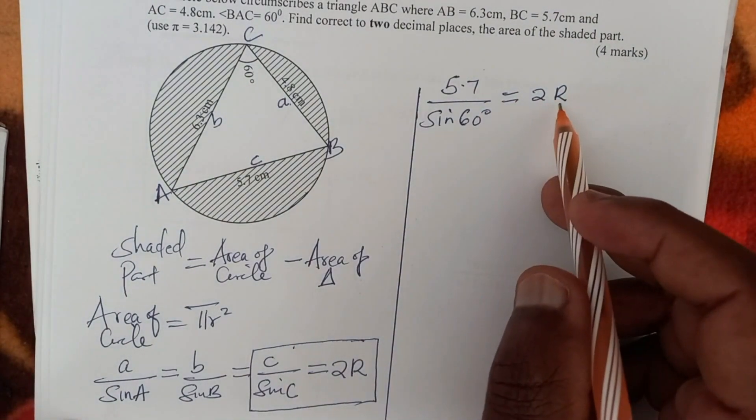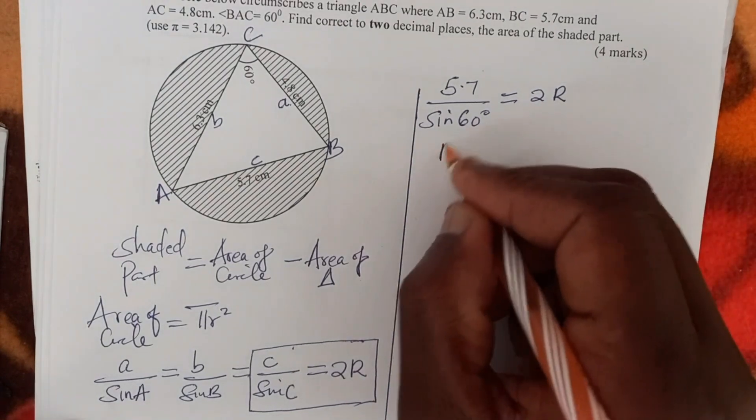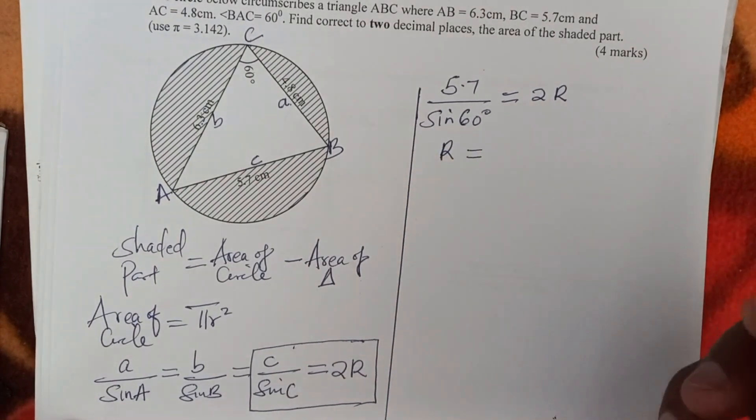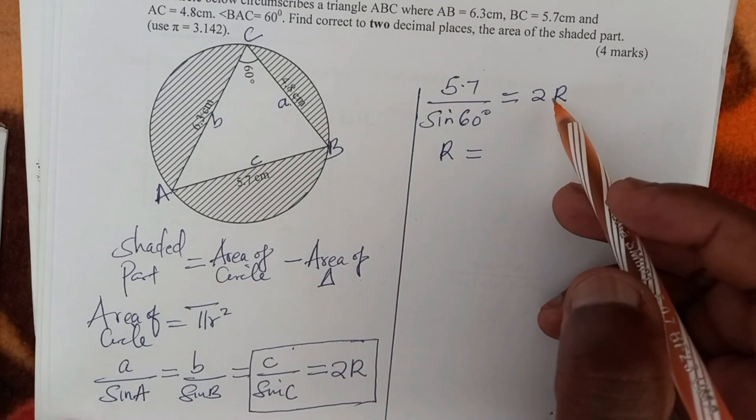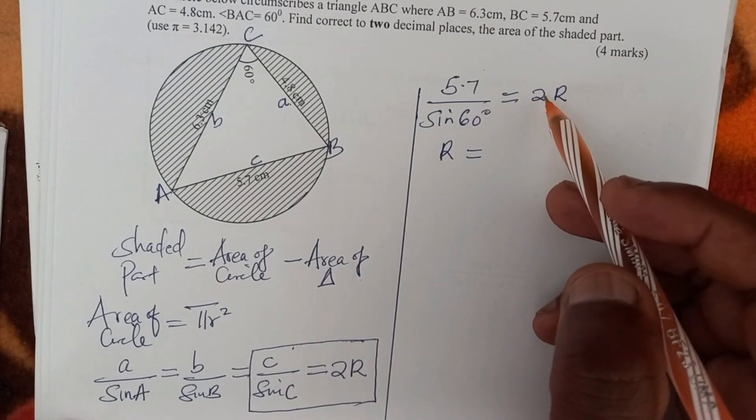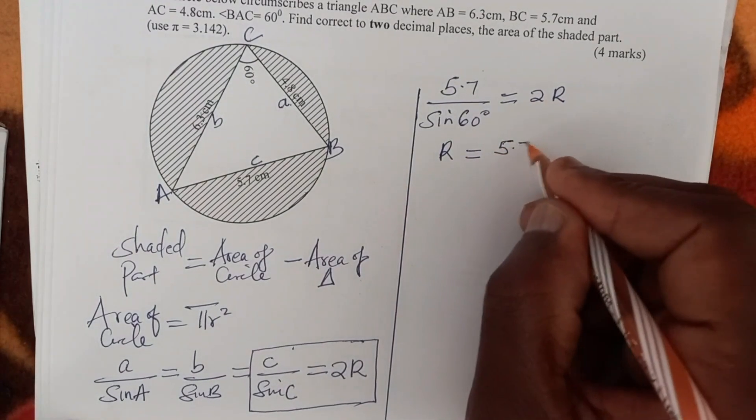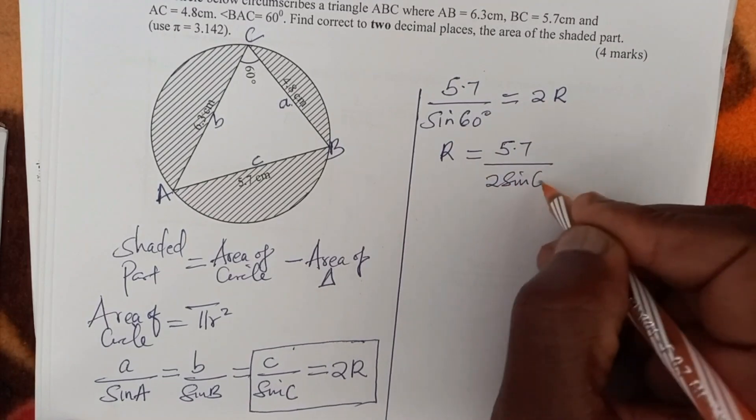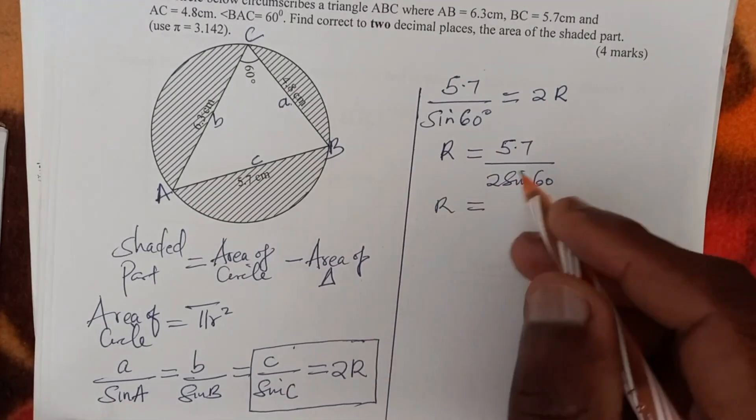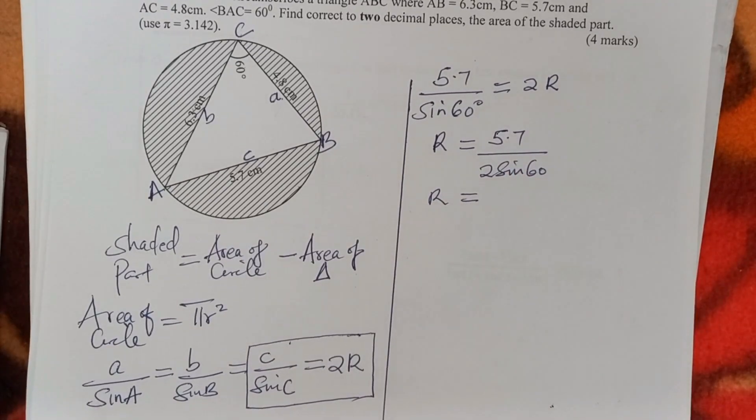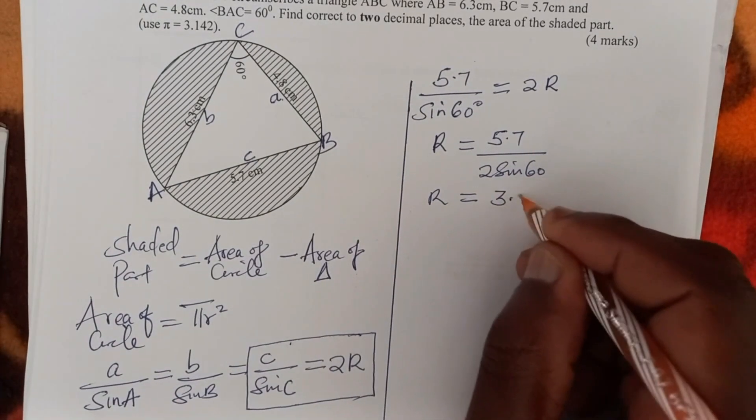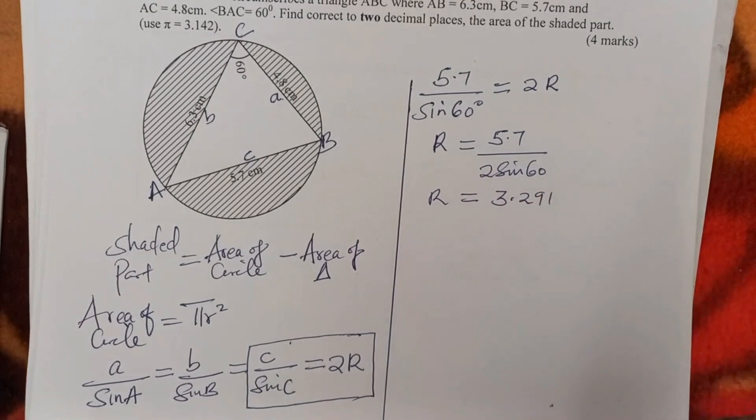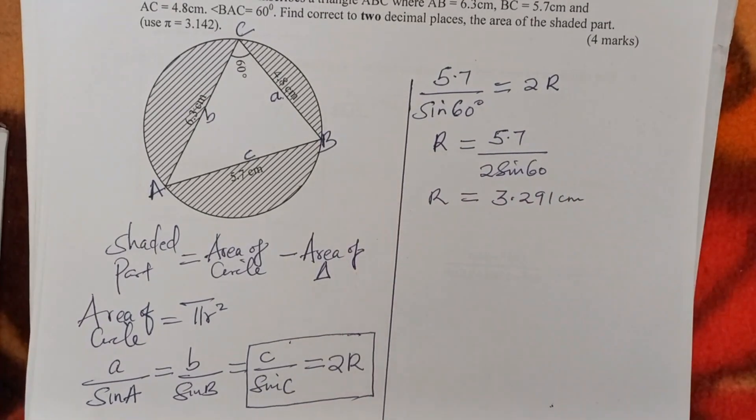So we just need to make R the subject. So R will be given by, to remain with R, just multiply both sides by the reciprocal of 2, which is a half. R equals 5.7 divided by 2 sine 60. Use a calculator to work out this, and this one will give 3.291, 3.291 centimeters.